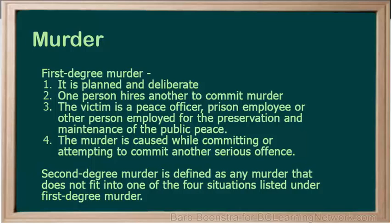Second degree murder is defined as any murder that does not fit into one of the four situations listed under first degree murder. Both first and second degree murder carry a minimum sentence of life imprisonment. The difference is when they can apply for parole — after 25 years for first degree murder and usually after 10 years for second degree murder.